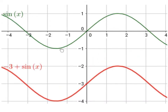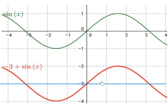The green curve is the general graph of y equals sine of x, and the red curve is y equals minus 3 plus sine of x. So it's been shifted 3 units down, and the midway line is now y equals minus 3.